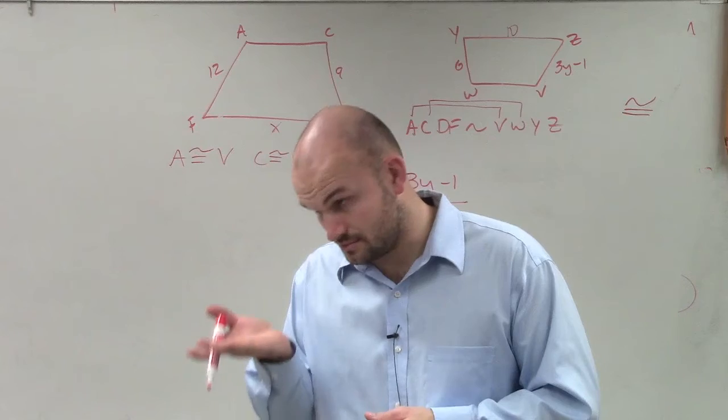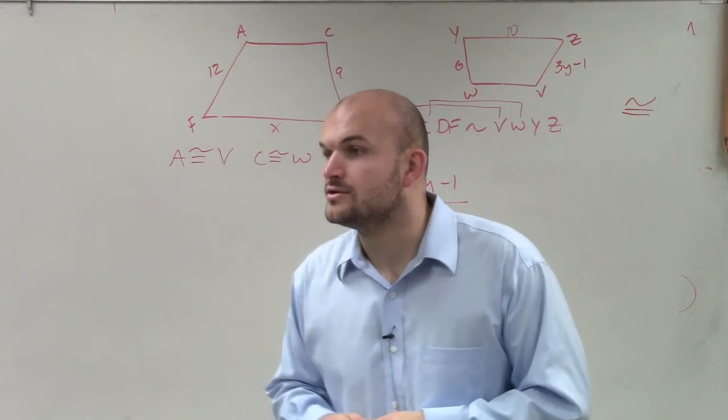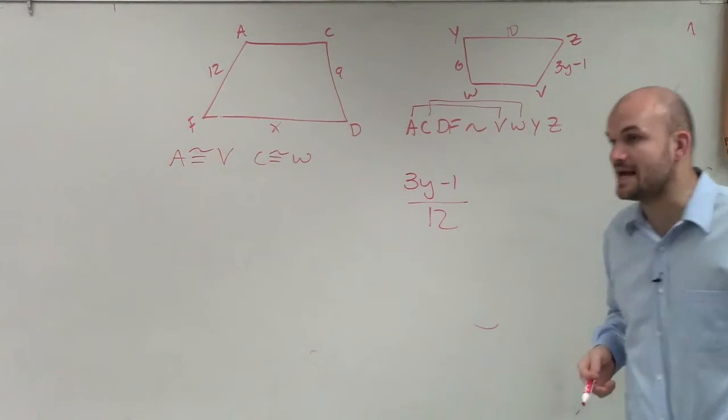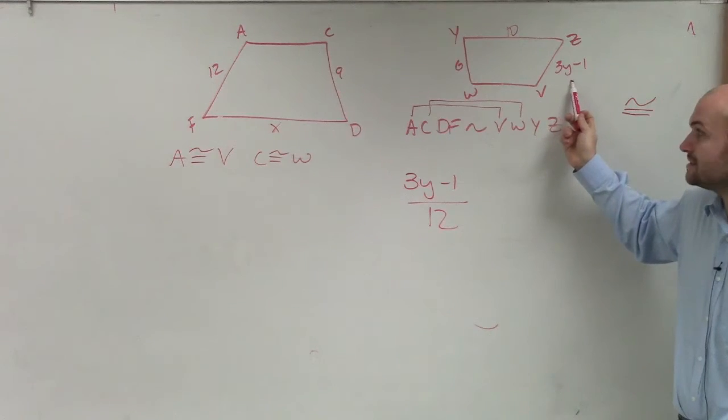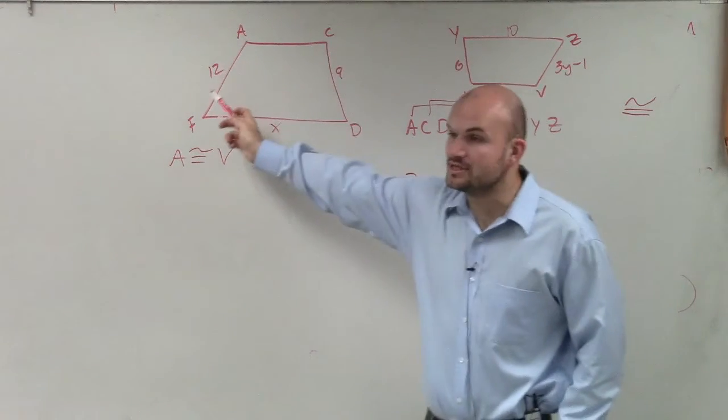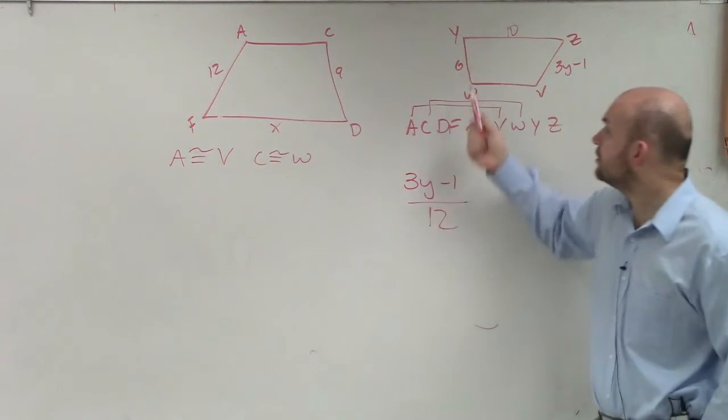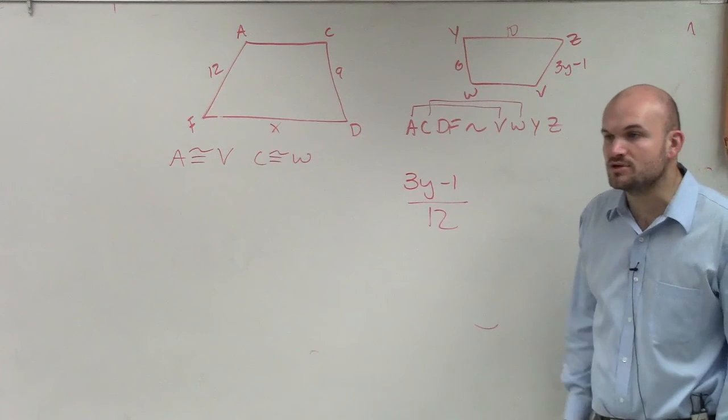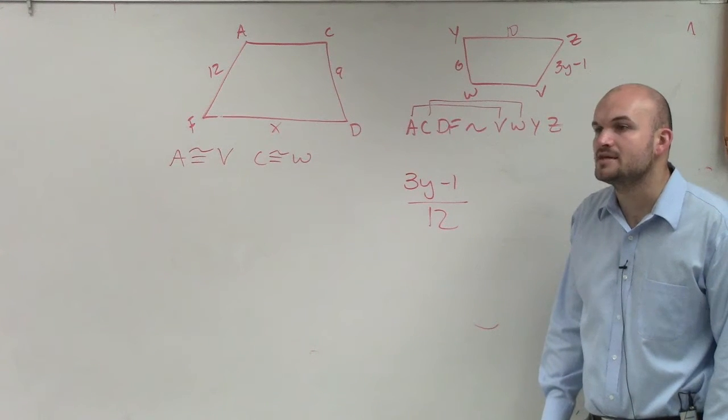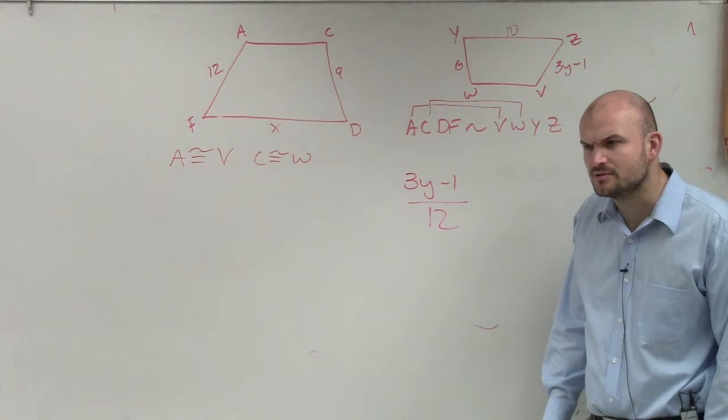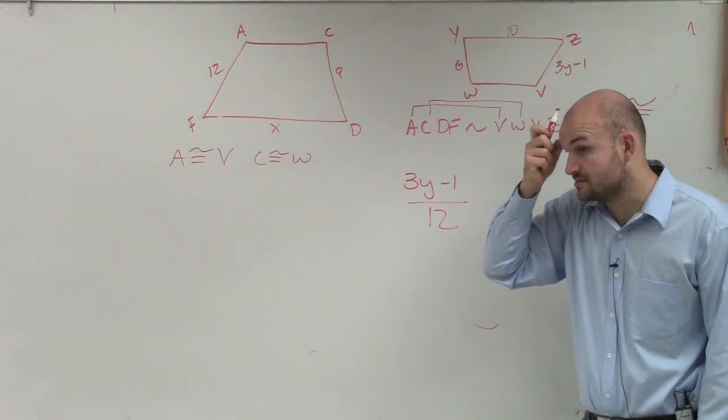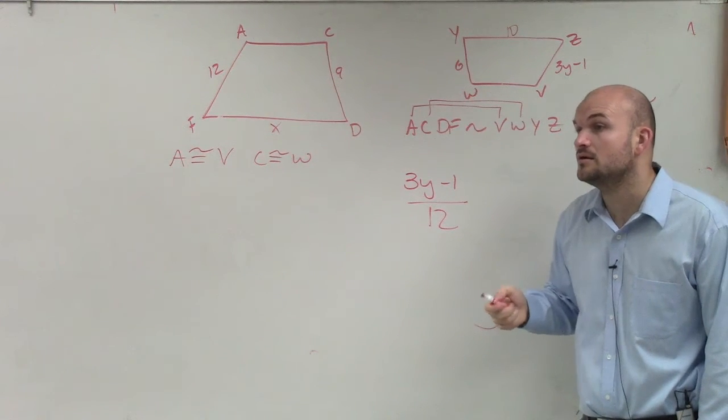OK. So AJ, set up. So let's look at exactly what we have. We know that this is proportional to this, all right? So what would YW be proportional to? Zach, what would YW be proportional to? You can take that and put it face down on your desk, by the way. Huh? 6 over 9? No. 6 over 9? No.